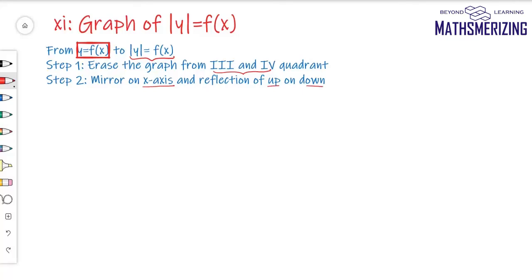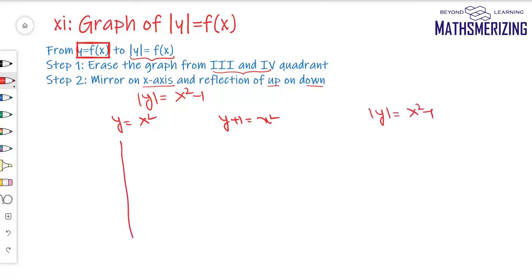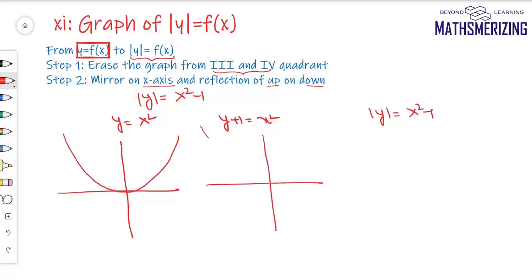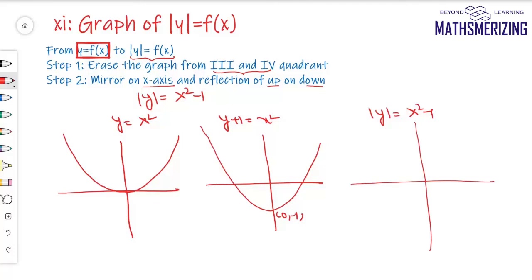For example, draw |y| = x² - 1. The basic graph is y = x². First apply the y-shift: shift the entire graph -1 unit along the y-axis to get y = x² - 1. Then for |y|: erase the graph from the third and fourth quadrant, place a mirror on the x-axis, and take the reflection of the upper part downward.